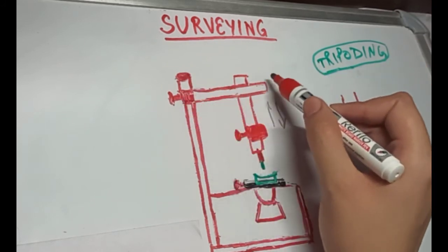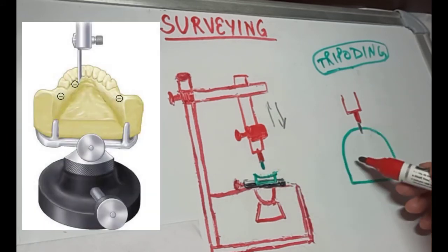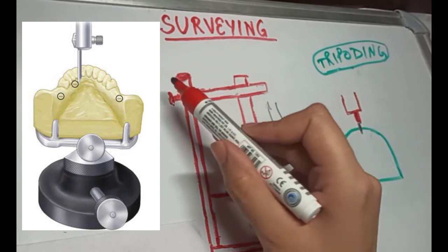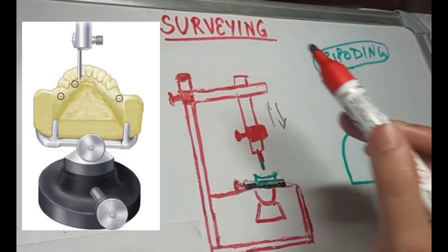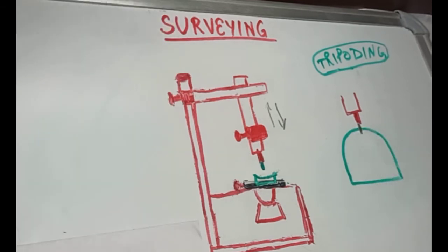And the height of the horizontal arm is adjusted such that the carbon marker touches the cast on the lingual surfaces of the cast that is behind the teeth. And then the horizontal arm is locked so that the tip of the carbon marker lies on the single plane. And the point on the cast where this carbon marker's tip touches the cast is marked on the cast.